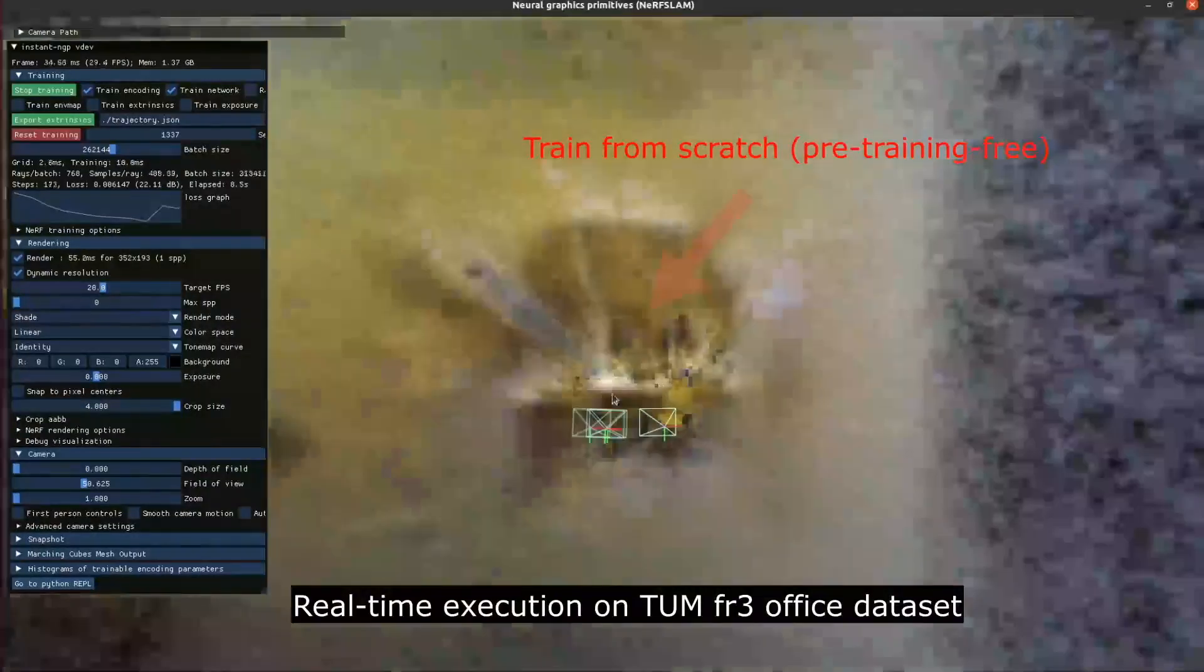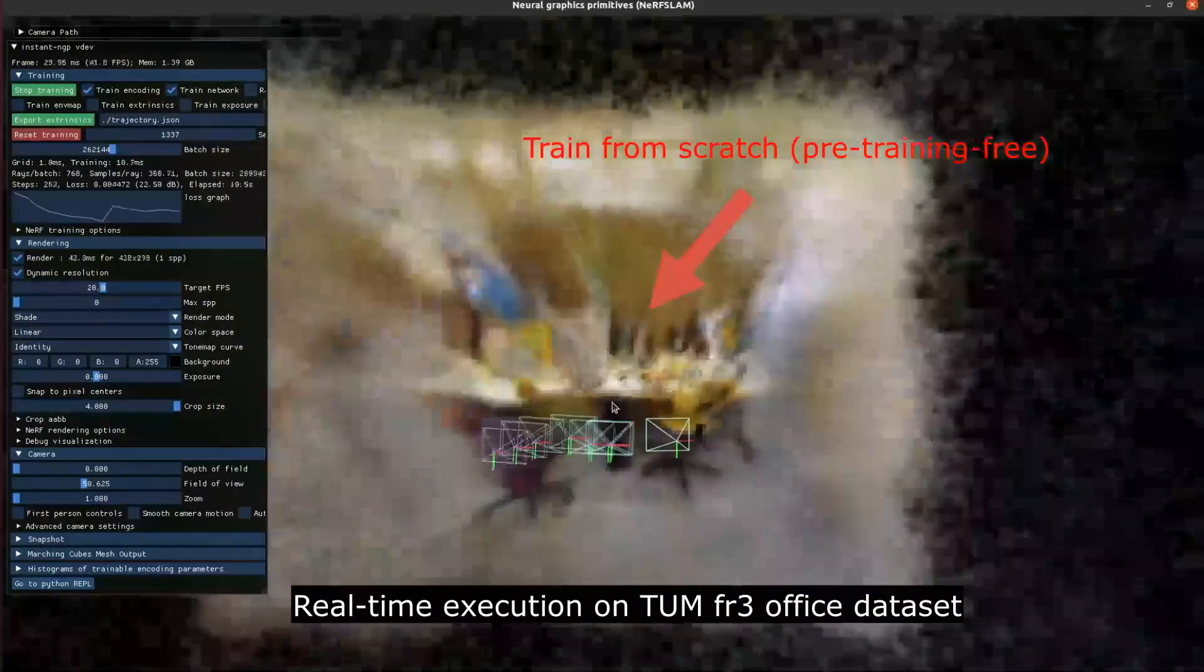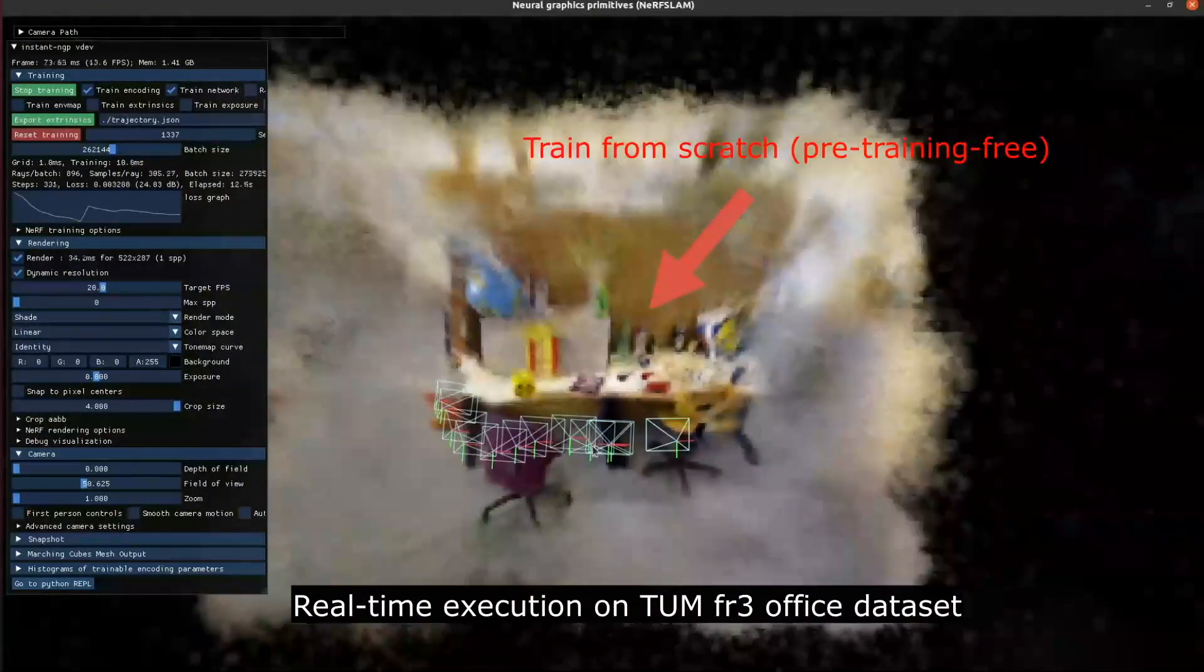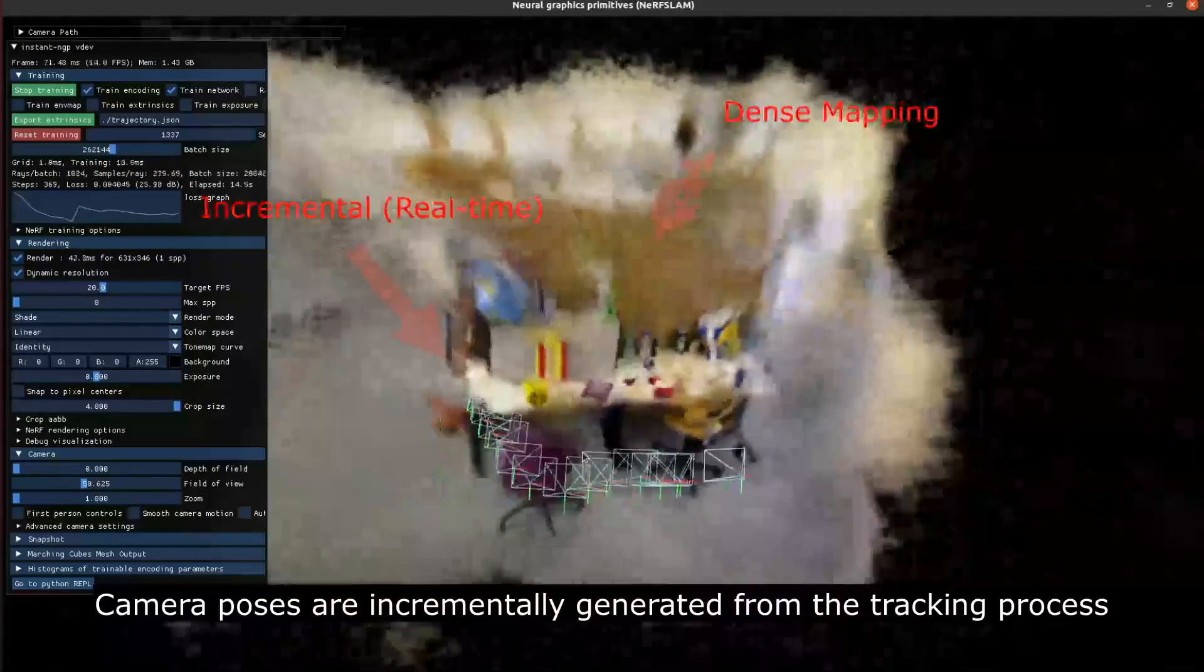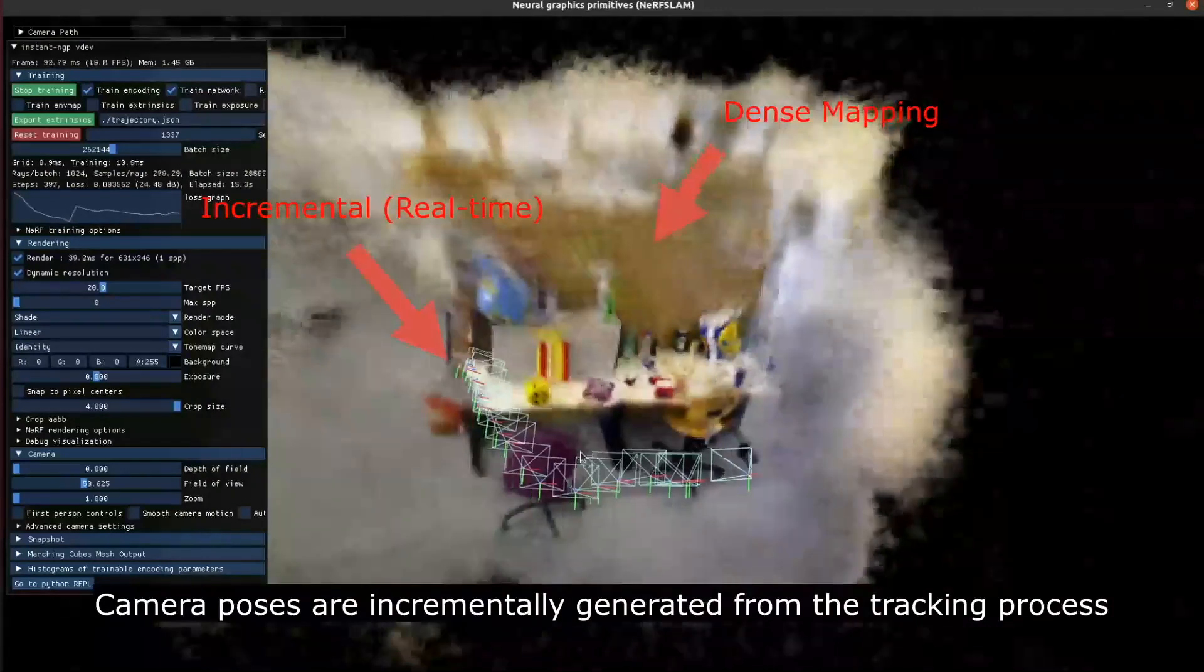Here's the real-time execution on the TUM FR3 office dataset. Camera poses are incrementally generated from the tracking process.